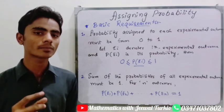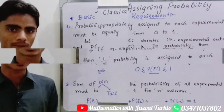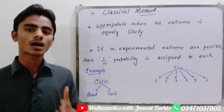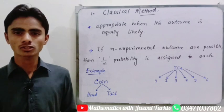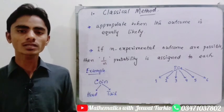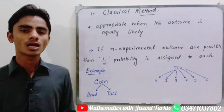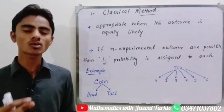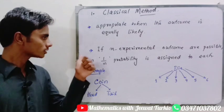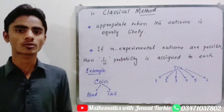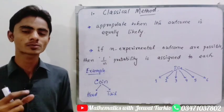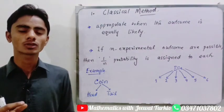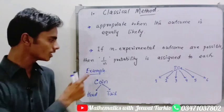These two are the basic requirements for assigning probability. Now we will talk about the methods used to assign probabilities. The first method is the classical method. The classical method is appropriate when the experimental outcomes are equally likely — that is, when the chances of each outcome are equal. If there are n equally likely possible outcomes, the assigned probability for each outcome is one by n.